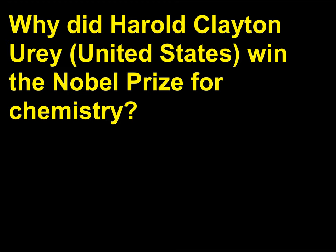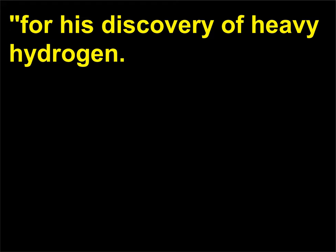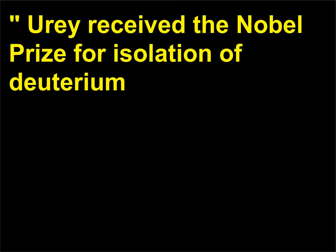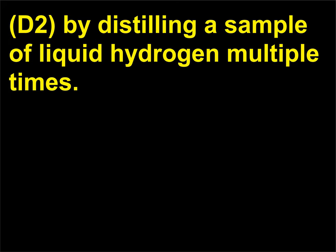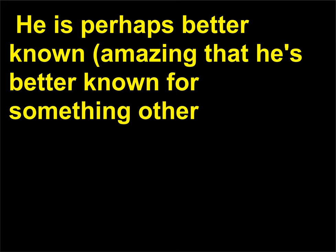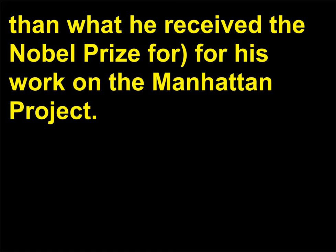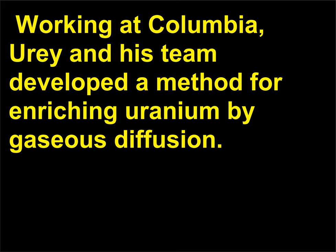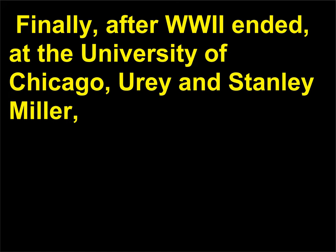For his discovery of heavy hydrogen. Urey received the Nobel Prize for the isolation of deuterium (D2) by distilling a sample of liquid hydrogen multiple times. He is perhaps better known — remarkably — for his work on the Manhattan Project. Working at Columbia, Urey and his team developed a method for enriching uranium by gaseous diffusion.